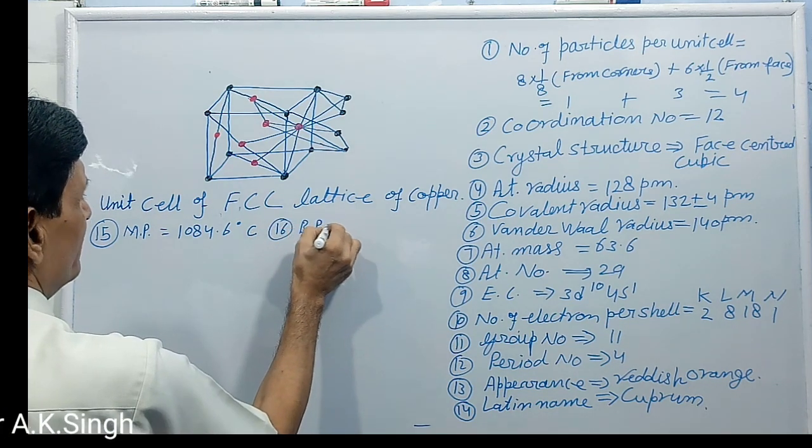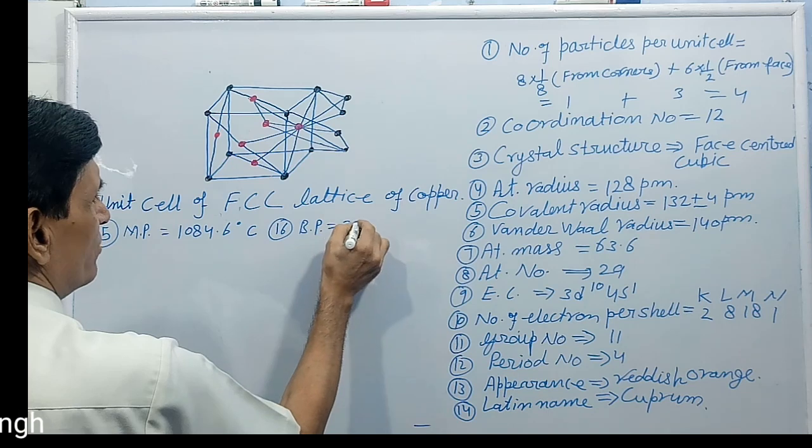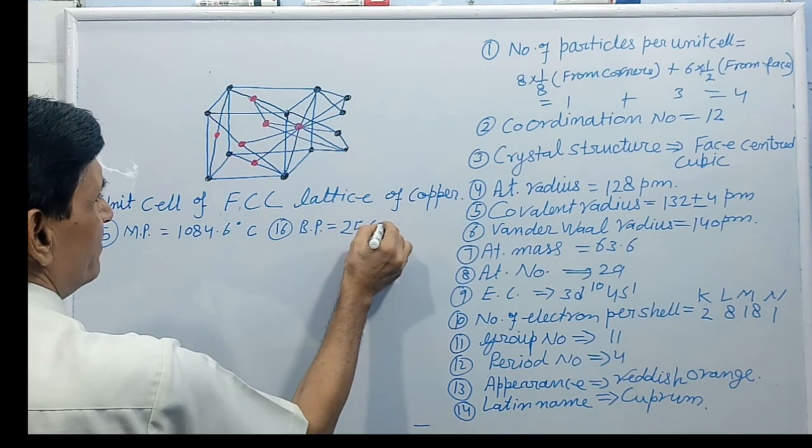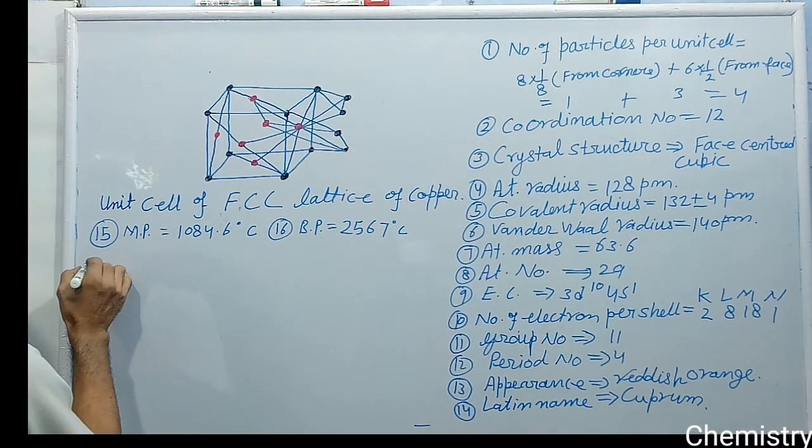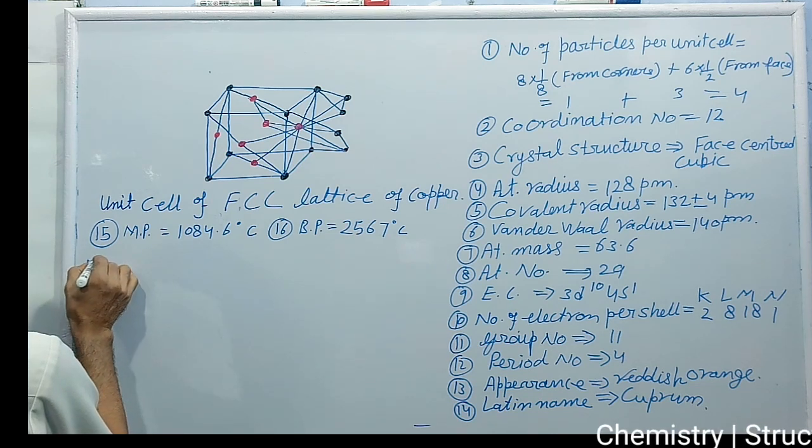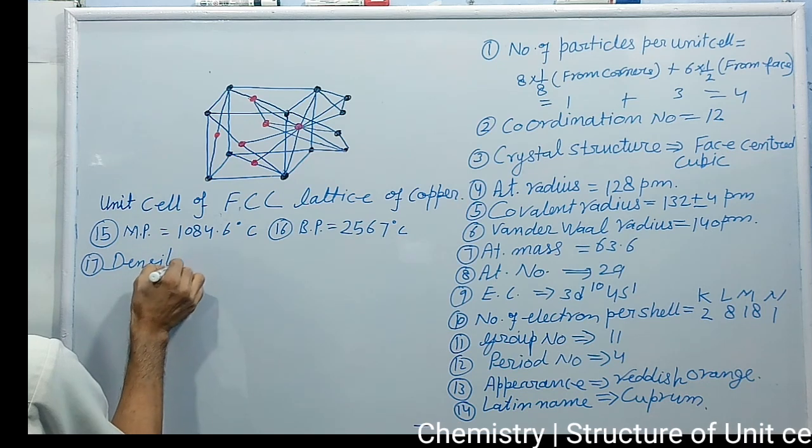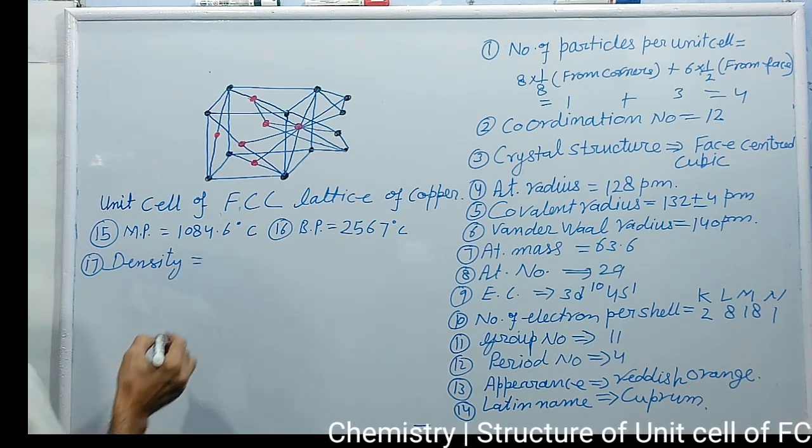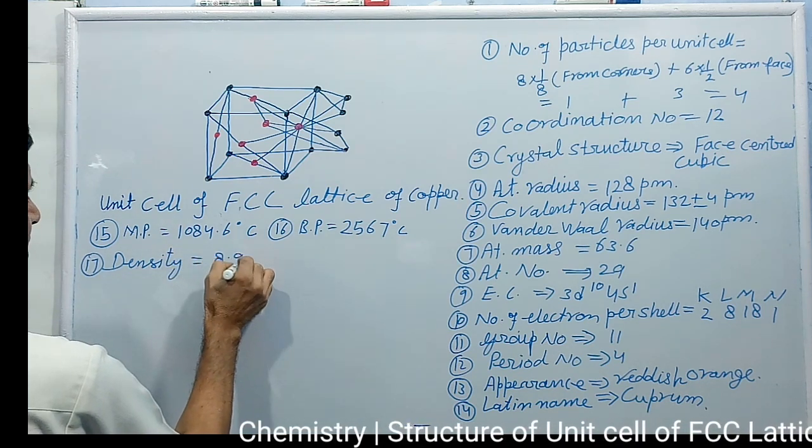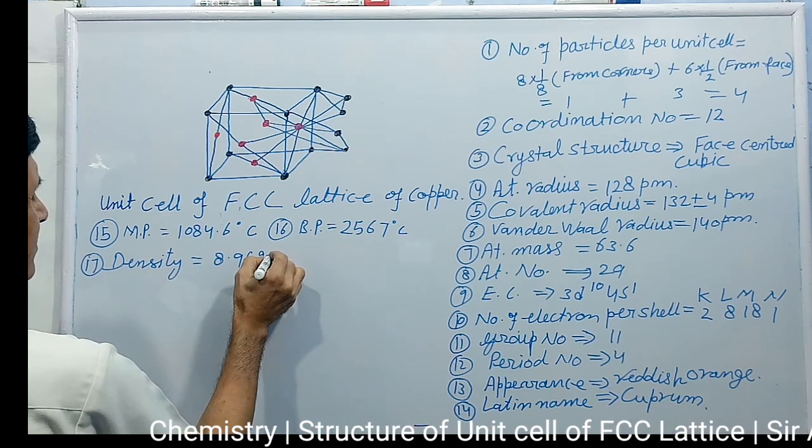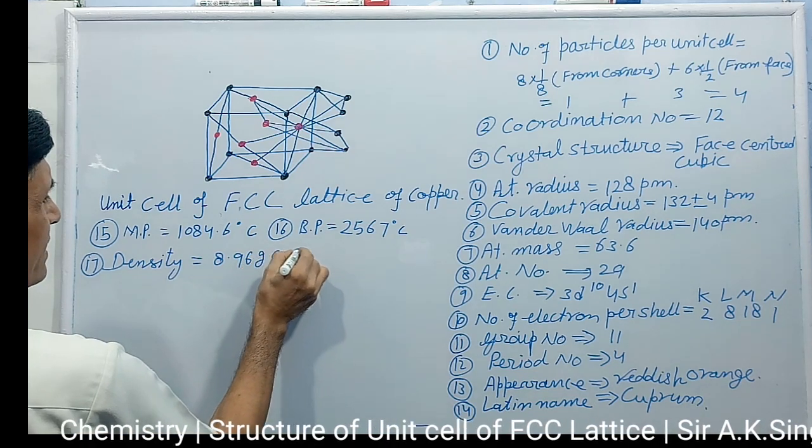1084.6 degrees centigrade and boiling point, its boiling point is around 2567 degrees centigrade and its density is on calculation, approximate it is coming 8.96 gram per centimeter cube.